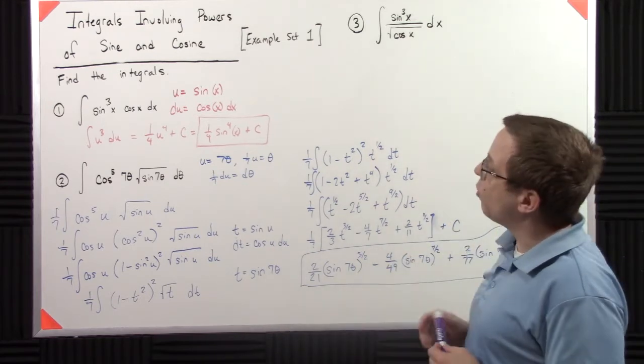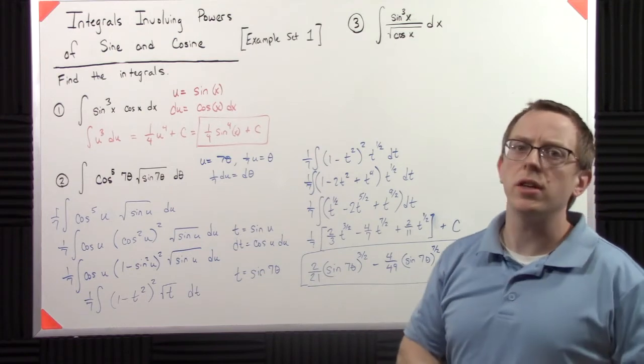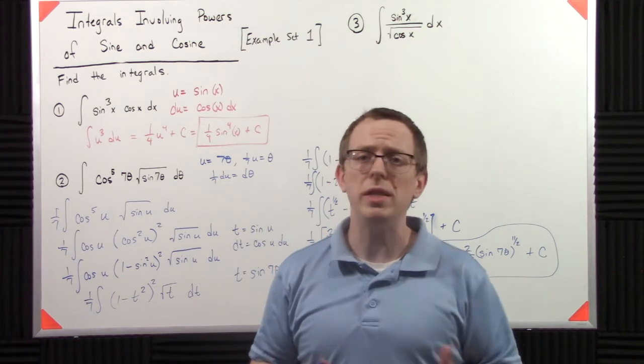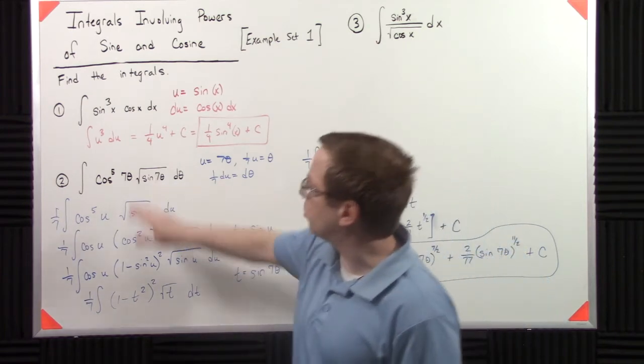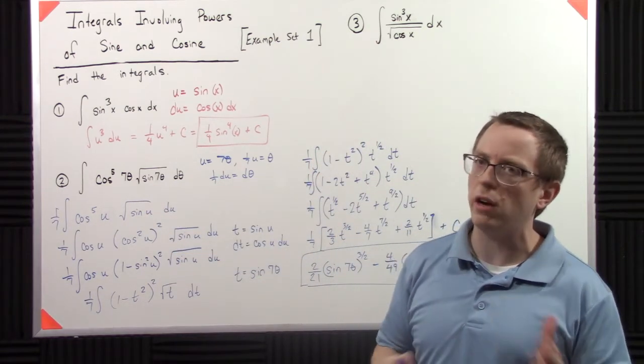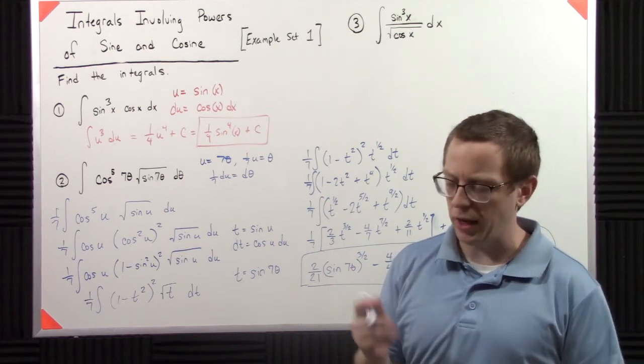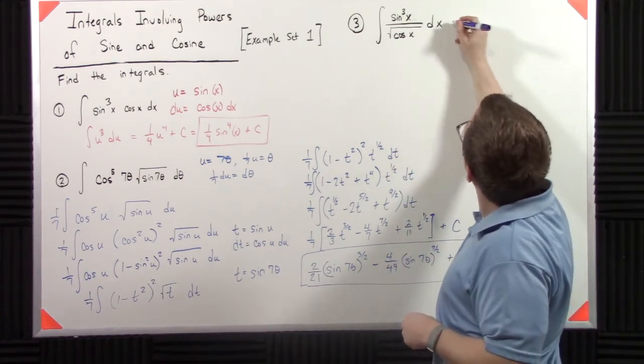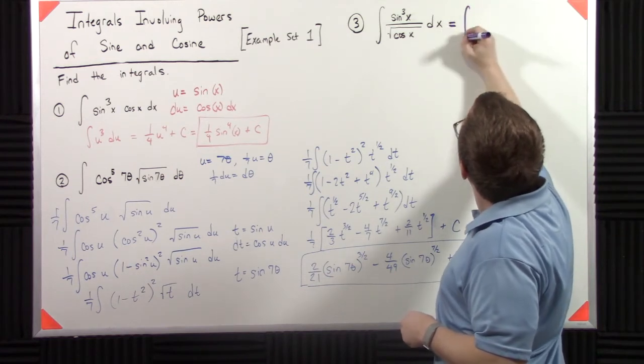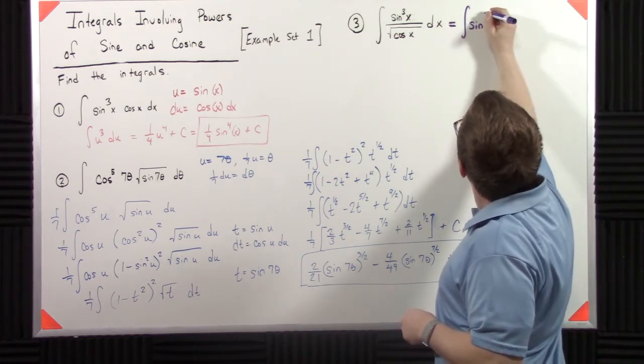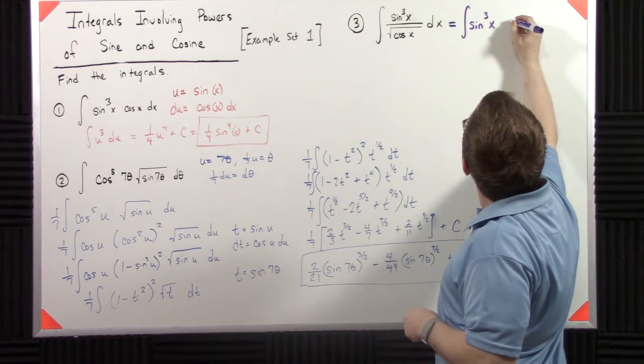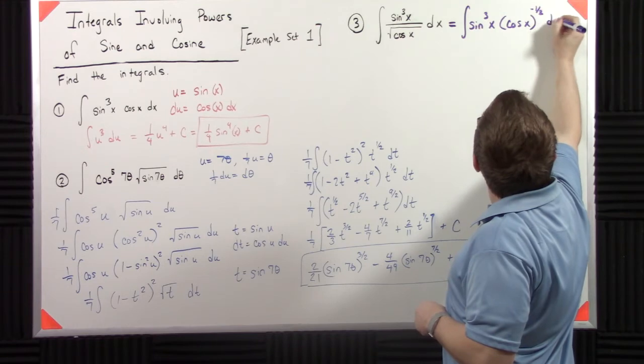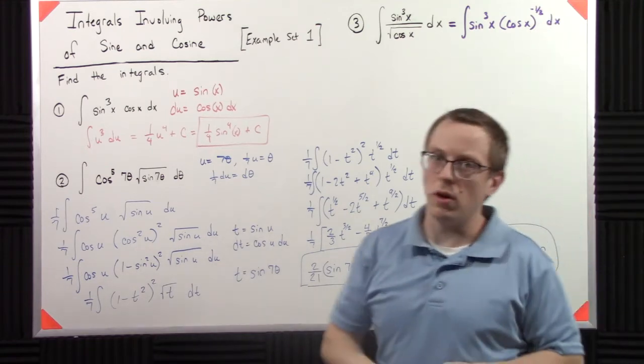Sine cubed x over the square root of cosine of x dx. So that's weird, right? It's kind of the same idea, but now we have a square root of the bottom. This is actually very, very similar to what we do here. It's very close. Closer than you might think. Because, really, that's all we've got going on there.